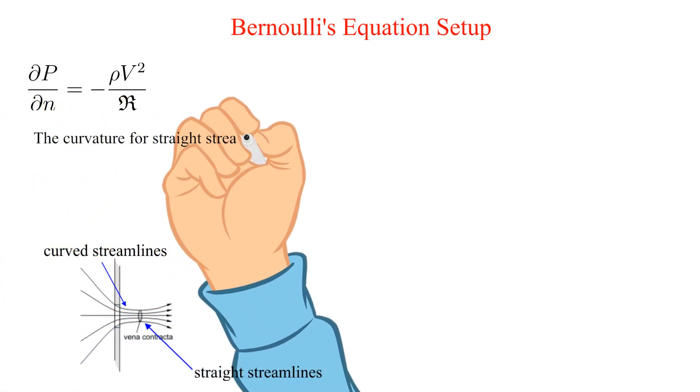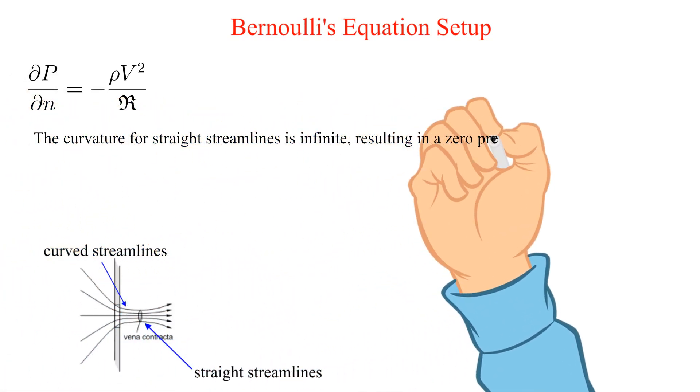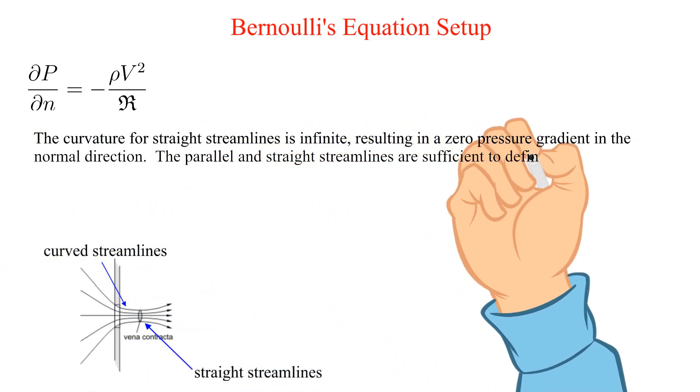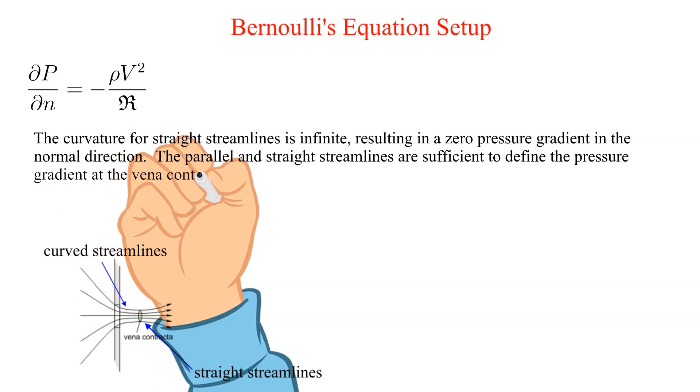The curvature for straight streamlines is infinite, resulting in a zero pressure gradient in the normal direction. The parallel and straight streamlines are sufficient to define the pressure gradient at the vena contracta to be equal to zero.